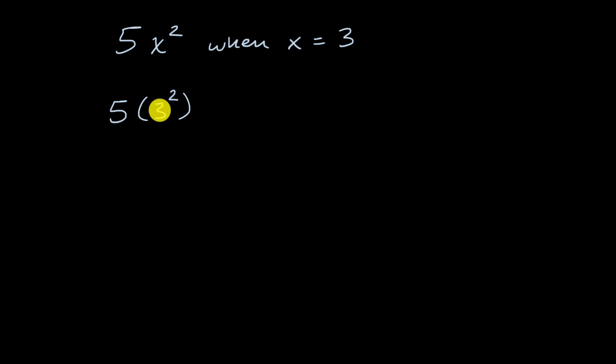And we know from order of operations, we do the exponents first. That's why I actually put a parentheses around the three squared and just make that clear. And three squared is of course equal to nine, and five times nine is equal to 45.